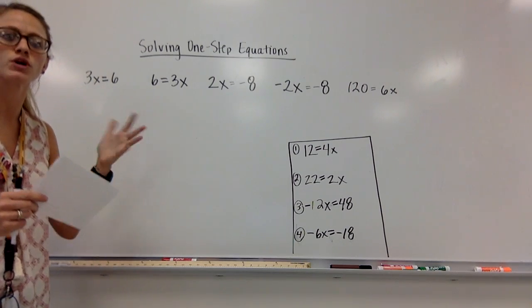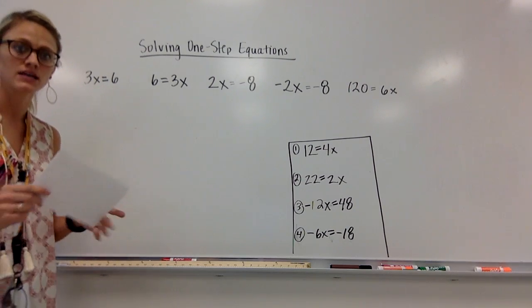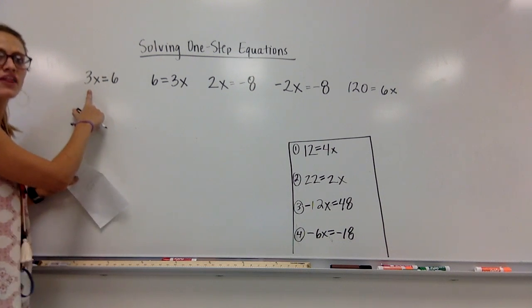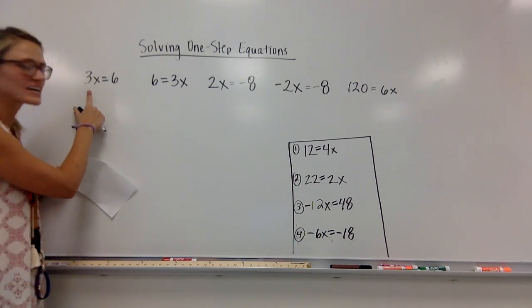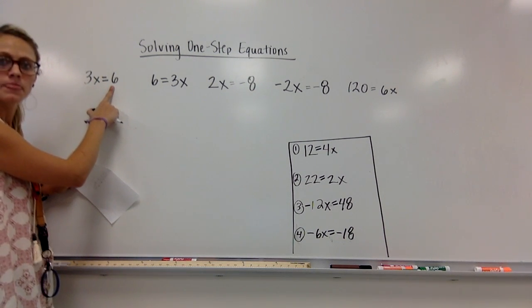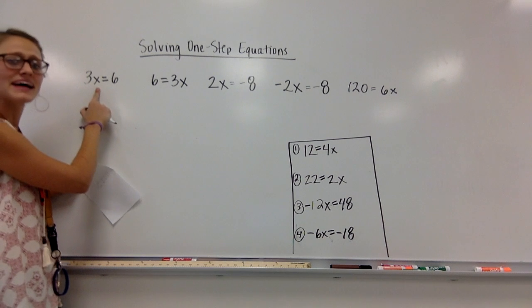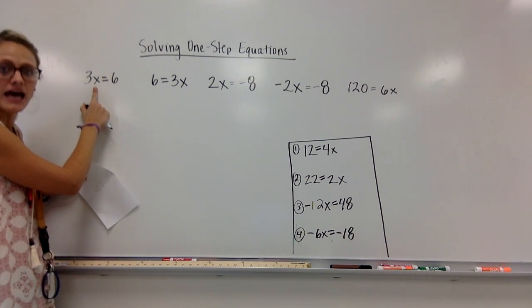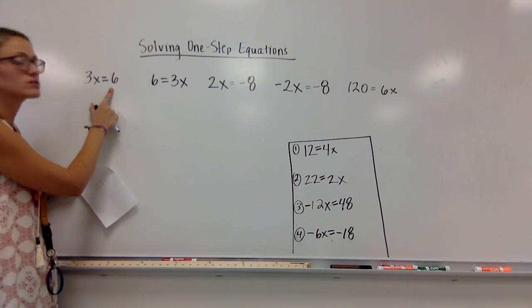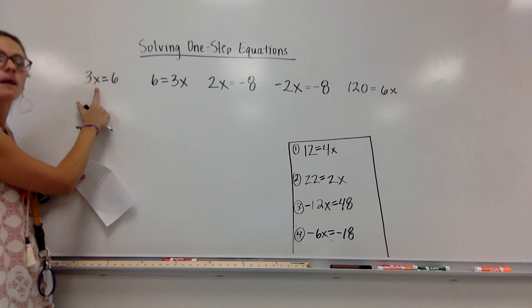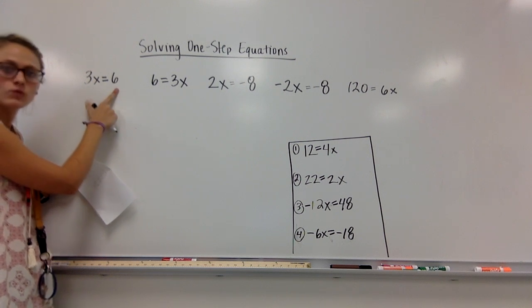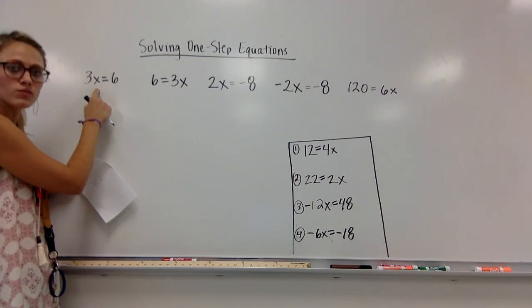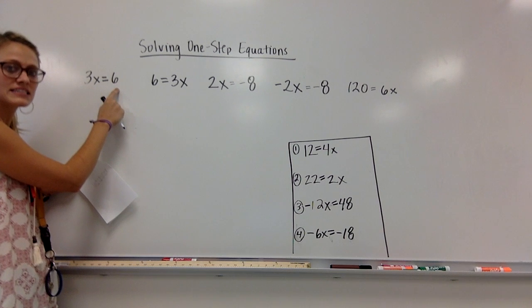In all the examples, we're working with x — that's the most common variable. So in this first example, we've got 3x equals 6. If you see a 3x, that just means 3 times x equals 6. So 3 times some number equals 6. We need to know what number am I multiplying by 3 to get 6.